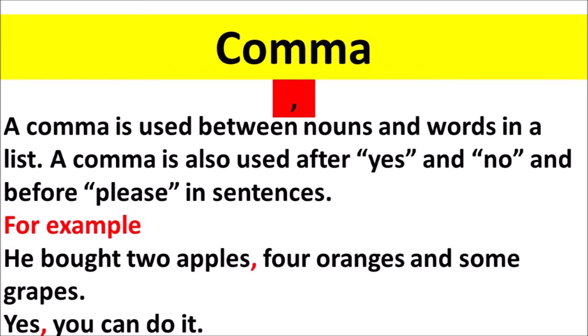Comma: a comma is used between nouns and words in a list. A comma is also used after yes and no, and before please in sentences. For example: 'He bought two apples, four oranges, and some grapes.' 'Yes, you can do it.'